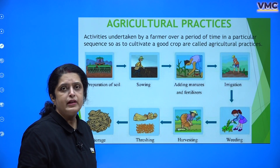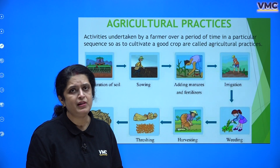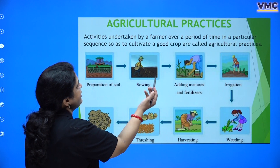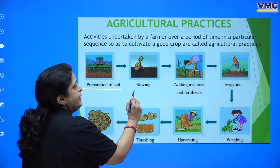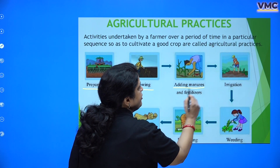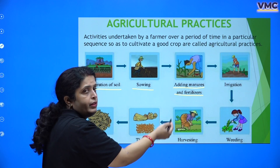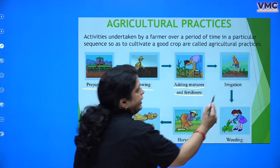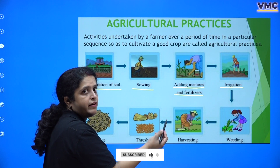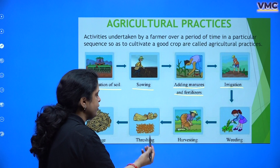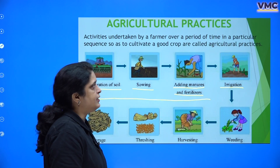How is this done? It sounds very easy that a farmer works the fields and food appears on your plate, but it is not that simple. Agricultural practices include: preparation of soil, then sowing — putting in the seeds — then adding manure and fertilizers, which can happen even before or during sowing. Then irrigation — providing water — weeding to remove waste plants, harvesting when you reap what you have sown, and threshing, winnowing, and storage. Today we will only learn about preparation of soil, sowing, and adding manure and fertilizers.